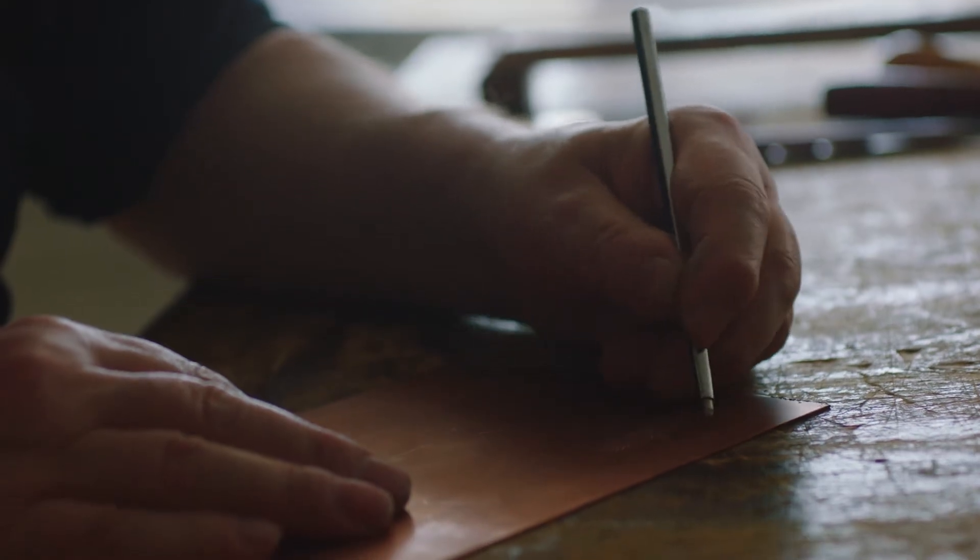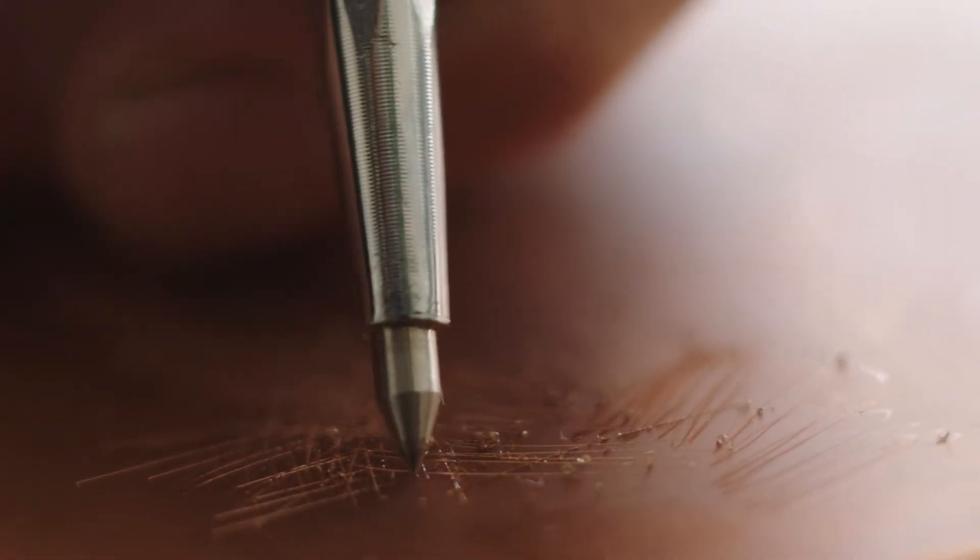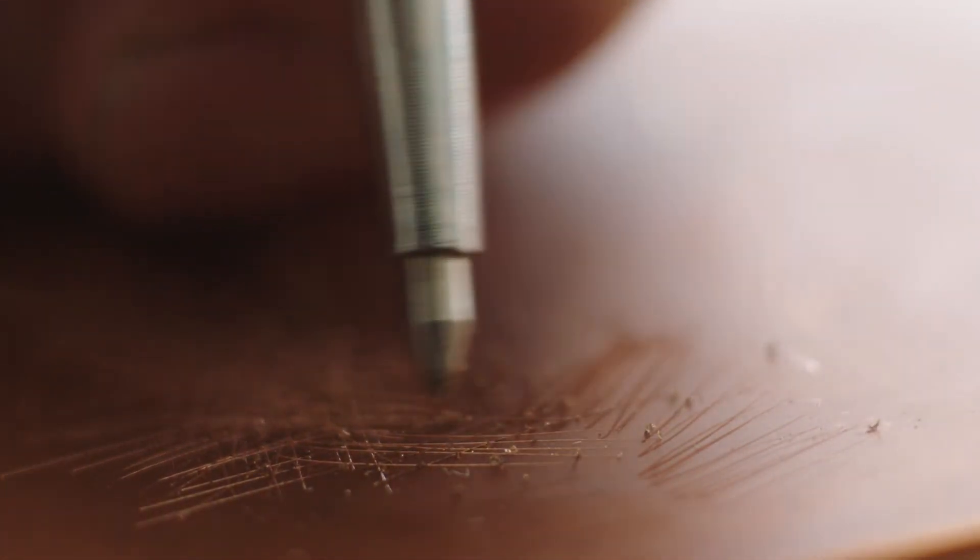When you draw on the covered plate with a hard steel point, you expose the copper without plowing into it like you do when you make a dry point.